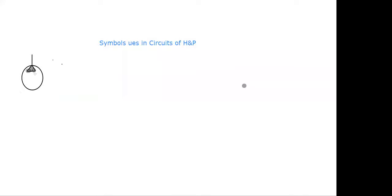If you put an arrow in this symbol, then it becomes a variable displacement pump.